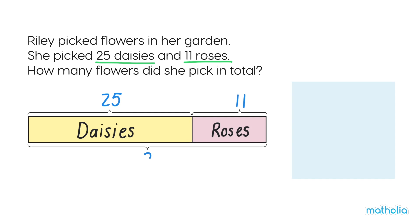To find the total, we add. Start with the ones. Five ones, add one one, give six ones.